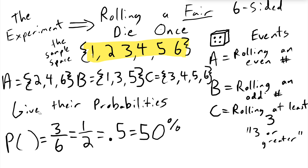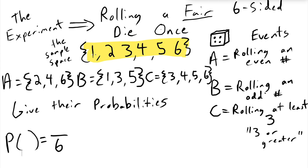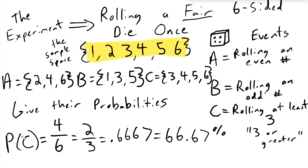What about the probability of B? B also has three ways it can happen, so the probability of B is exactly the same — it's 50% as well. But the probability of C: there are still six possible outcomes, but C can occur in four ways, so the probability of C is four out of six, which simplifies to two-thirds. C is more likely than A or B because there are more ways it can happen.